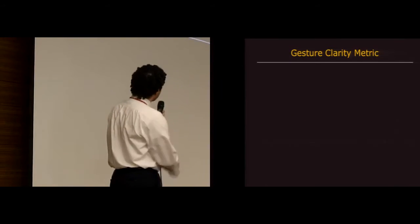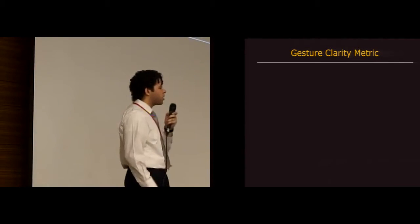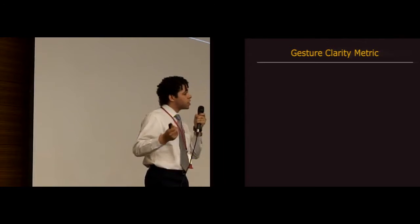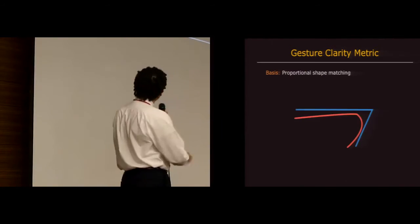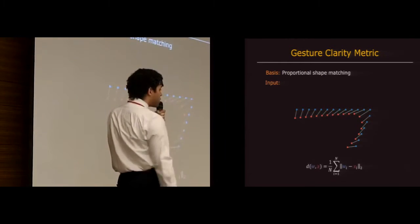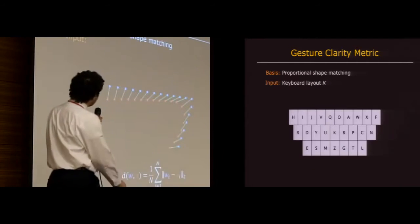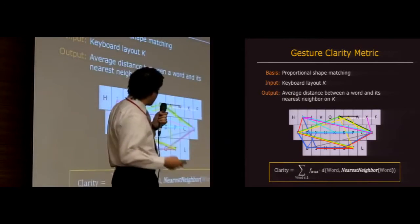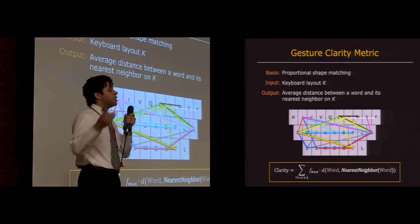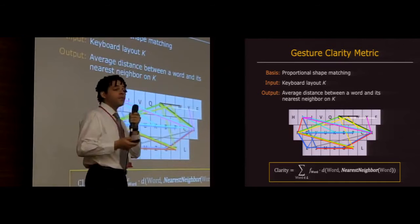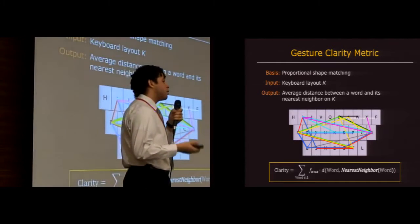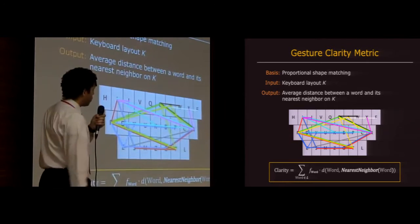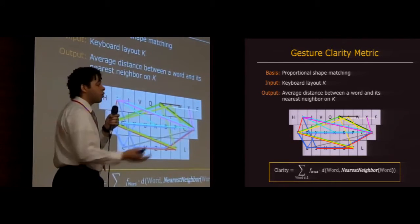So the first metric, and most important by far, is the gesture clarity metric. The goal of the metric is to say how distinct the word gestures in a keyboard layout are. So it's based on proportional shape matching, which we saw earlier. It takes a keyboard layout as input, such as this. And then as output it finds the average distance between a word and its nearest neighbor on that keyboard layout. The nearest neighbor is the word that it's most likely to be confused with. So here I'm showing ten gestures on the layout, just random words, but our lexicon actually has 40,000 gestures.